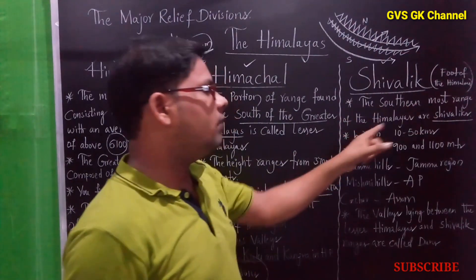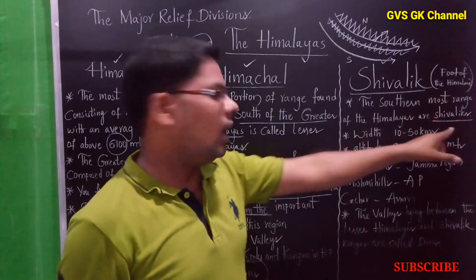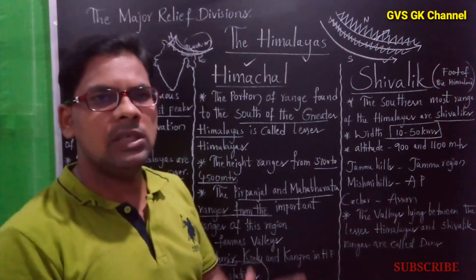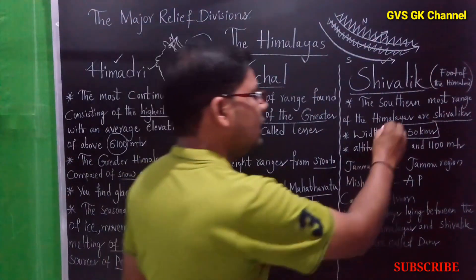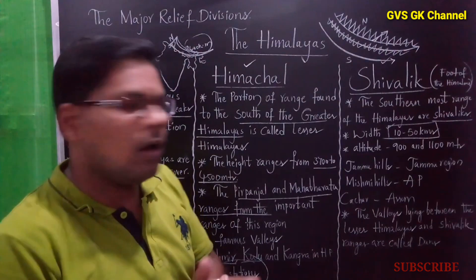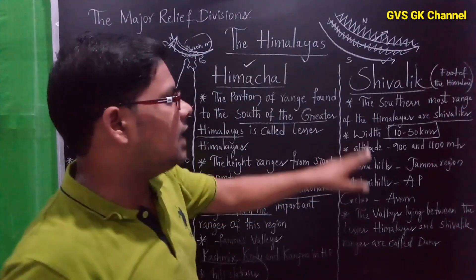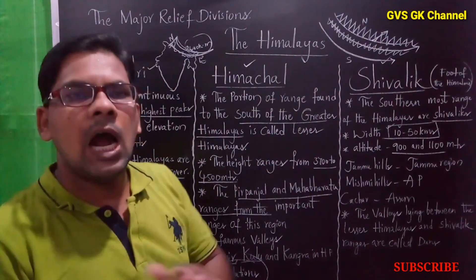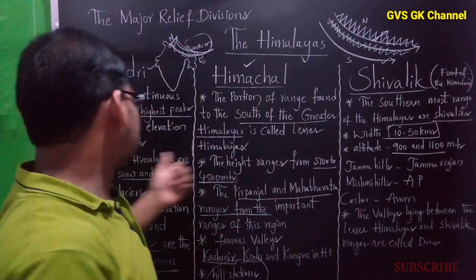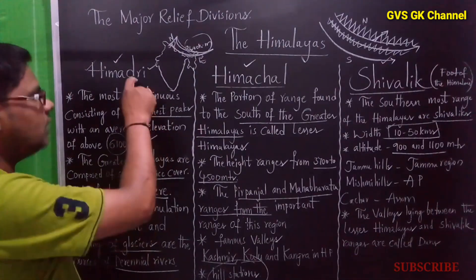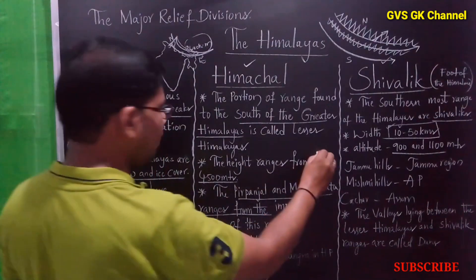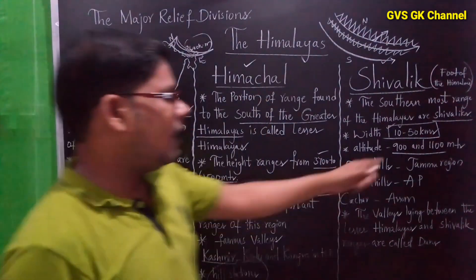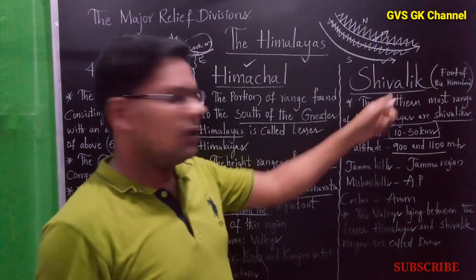You can get a multiple choice question based on this: the southernmost range of the Himalayas is called Shivalik. The width of the Shivalik range is only 10 to 50 kilometers, and the altitude of this region is between 900 and 1100 meters. To compare: Himadri has 6100 meters, Himachal has 3700 to 4500 meters, and Shivalik has 900 to 1100 meters.